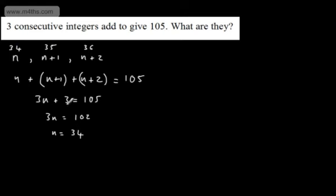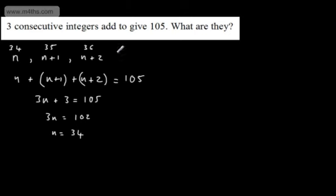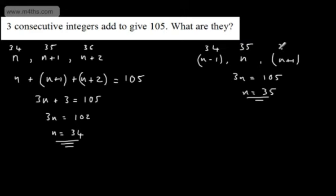So the three consecutive integers are 34, 35, and 36. If you'd called the middle number n instead, you'd get 3n equals 105, giving n equals 35, and then the numbers would be 34, 35, and 36 — the same answer. This is an example of a linear equation. I prefer the first approach, but both are valid options.